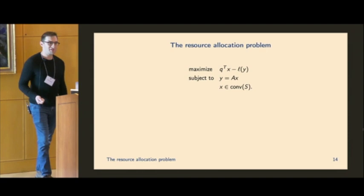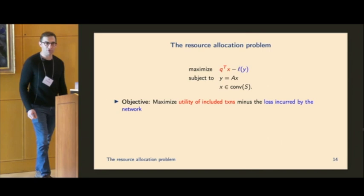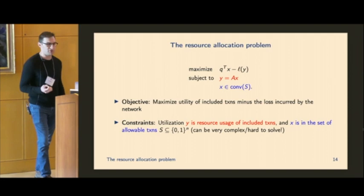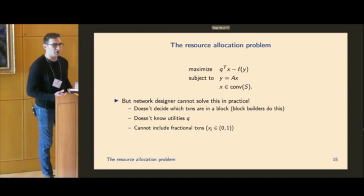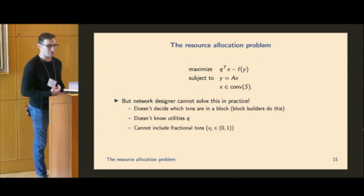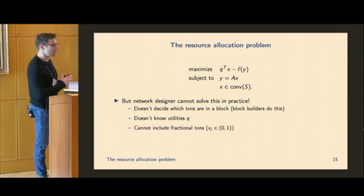Putting all these together, we can write the resource allocation problem quite simply. And that's just going to be maximize the utility of included transactions minus the loss incurred by the network subject to the constraint that Y is going to be the resource usage of the included transactions. And these transactions are in the convex hull of the set of allowable transactions, which, again, can be really complex or hard to solve. Of course, we can't actually solve this in practice because the network designer doesn't include what or doesn't decide which transactions are in a block. The block builders do that. The network designer doesn't actually know what the utilities are. And, of course, we can't include fractional transactions. So kind of, we have all these problems.